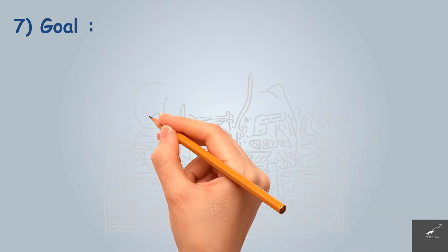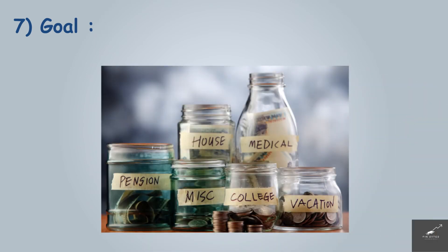Number seven: goal. This is one of the important steps in achieving our financial freedom. We should plan for our future goals such as child education, construction of home, buying a car, retirement corpus, or whatever it may be. We will have a fair idea of the future cost of all our present goals, which will help us identify how much funds we will be requiring and how much to allocate monthly or yearly towards achieving those financial goals.